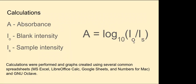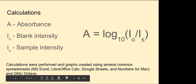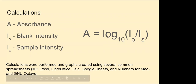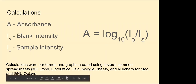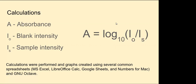I-zero — which I called the blank intensity on an earlier slide — and I-sample, and hopefully this is familiar to all: just how you convert these intensities to absorbance. Over many times of doing this, I've used many spreadsheets to organize and collect the data, and then for some of the math that we did, we use Octave. I'll be able to talk about that a little in the results.